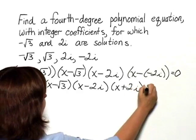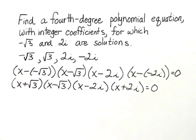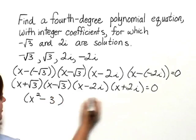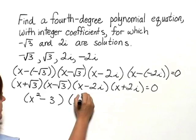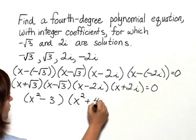Now looking at this carefully, when we multiply this, this would actually multiply to be x squared minus 3. And this multiplies as x squared plus 4.